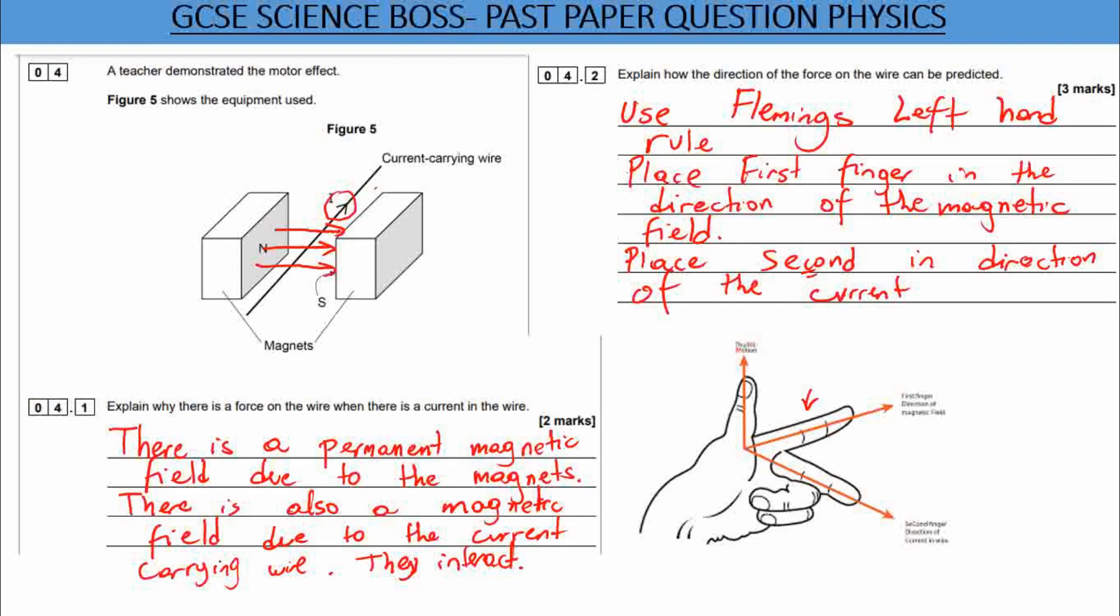So the direction that the wire will move is going to jump, well, it's going to move downwards. So your thumb gives the direction, direction of the force. Once you've said all of that, you will get your marks.